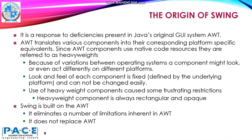Swing got originated in response to fulfill the deficiencies present in Java's original GUI system, AWT — Abstract Windows Toolkit. AWT translates various components into their corresponding platform-specific equivalents. Since AWT components use native code resources, they are referred to as heavyweights. Because of the variations between operating systems, a component might look or even act differently on different platforms.